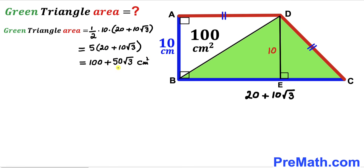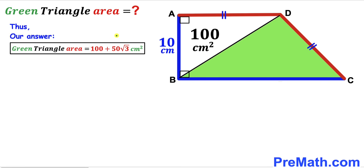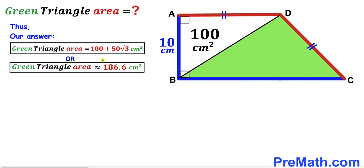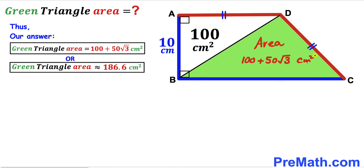The area of the green shaded triangle BCD is 100 + 50√3 centimeters square, which is approximately 186.6 centimeters square. That is our final answer. Thanks for watching — please don't forget to subscribe to the channel for more exciting videos.